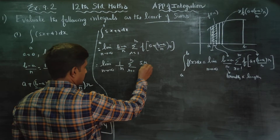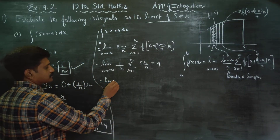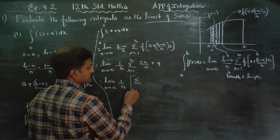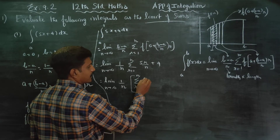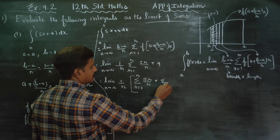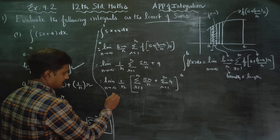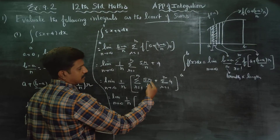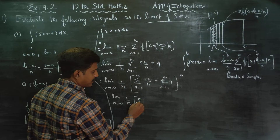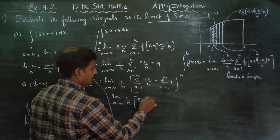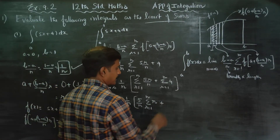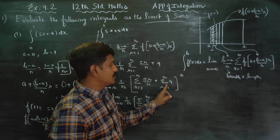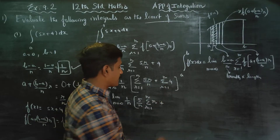This becomes: limit n turns to infinity of (1/n) times [5/n times sigma r equals 1 to n of r, plus sigma r equals 1 to n of 4]. The sigma of a constant 4 equals 4n, since sigma of a constant number equals that constant multiplied by n.